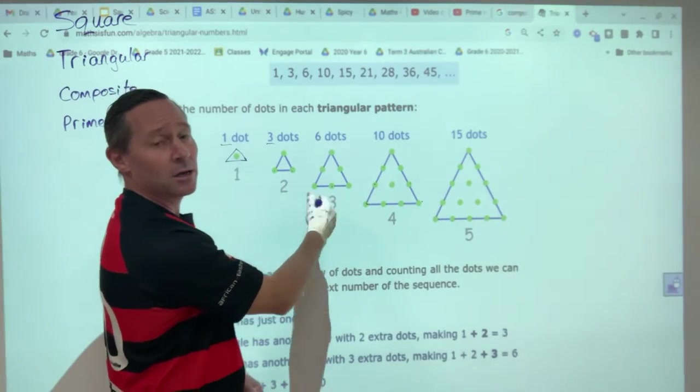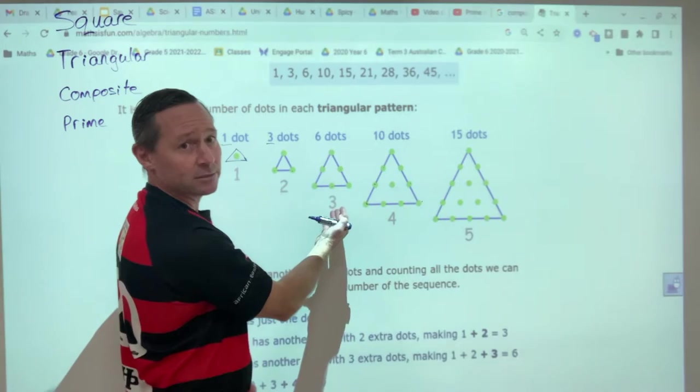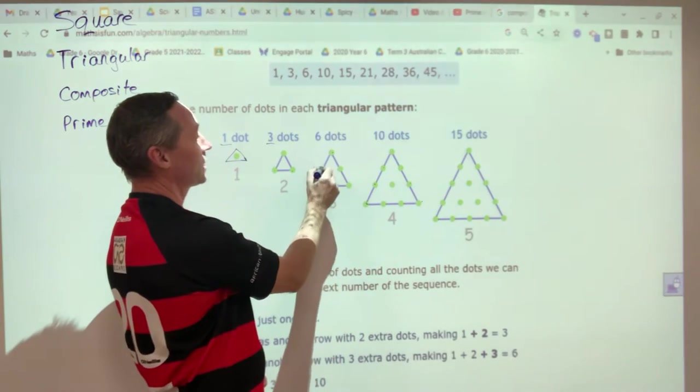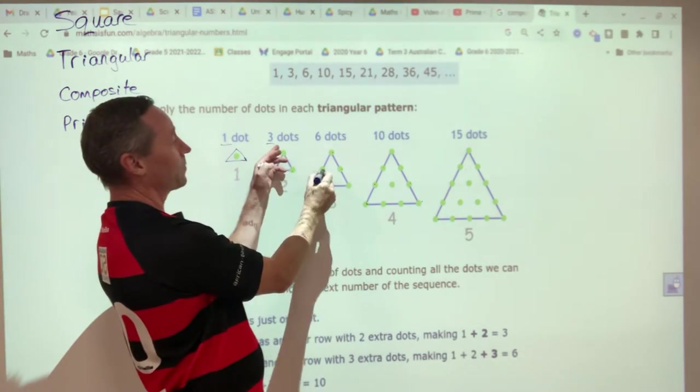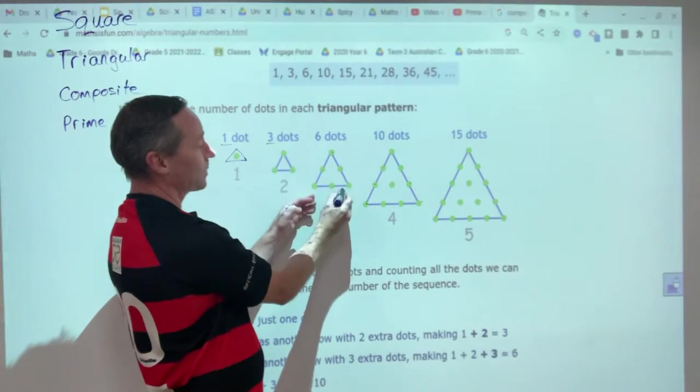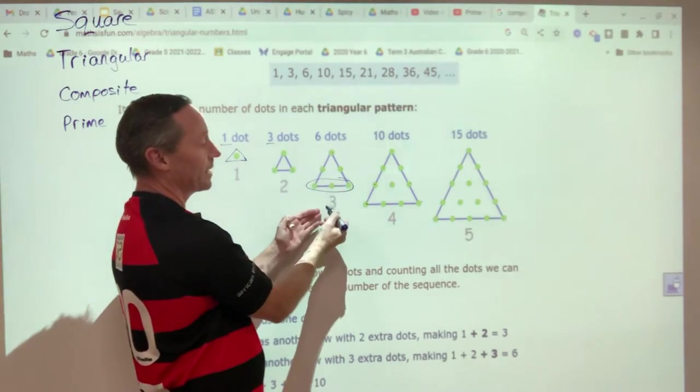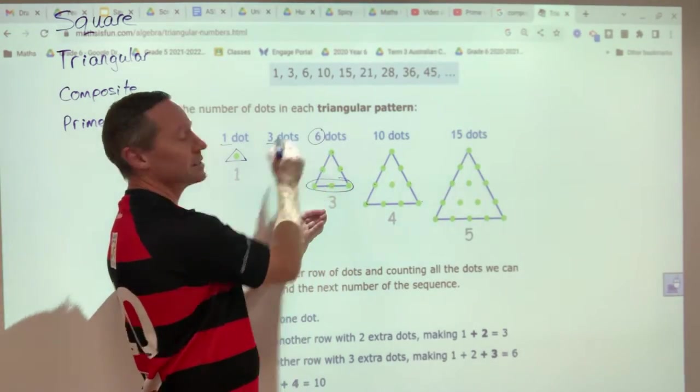My third triangular number, I'm going to add three to it. So I've got my one, two, three that I had before, three dots, but I'm adding three more to it down here. So I now have a total of six dots.